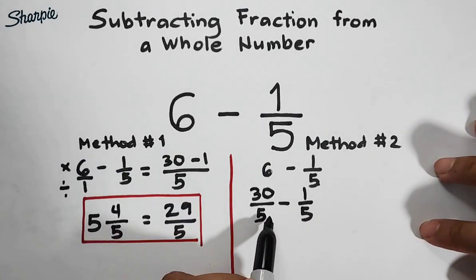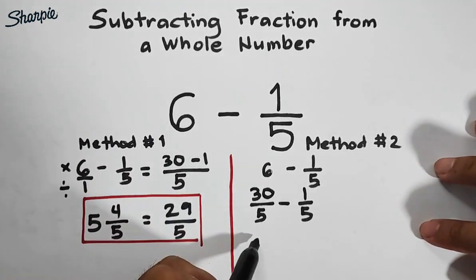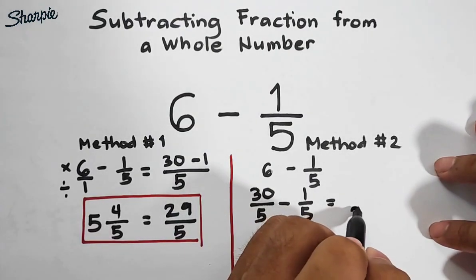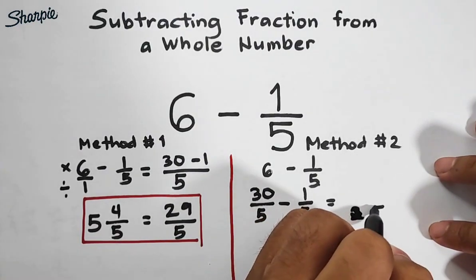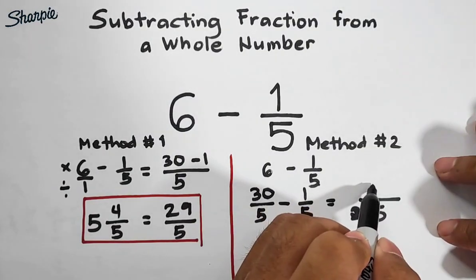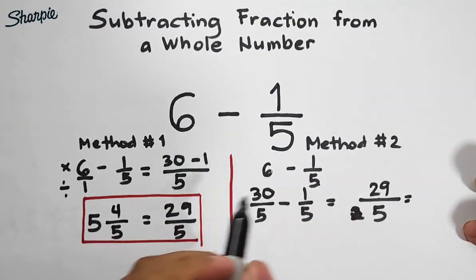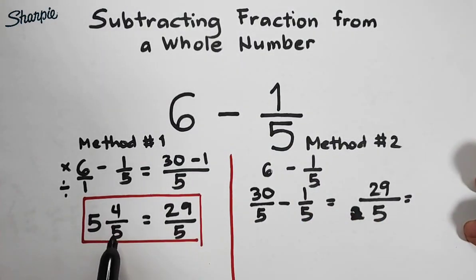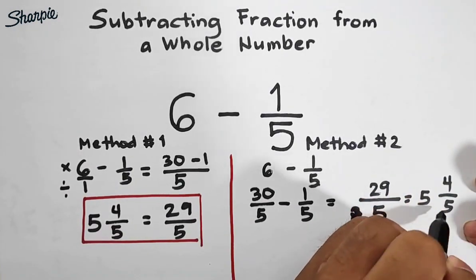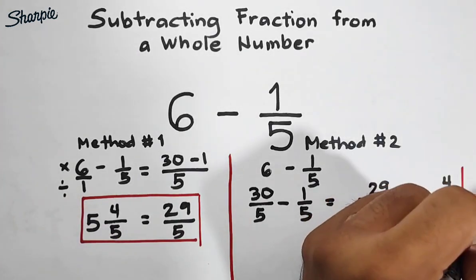Then subtract 1 over 5. In this case, we don't need to find the LCD because they have the same denominators. Simply copy the denominator, which is 5, and subtract the numerators: 30 minus 1. That gives you 29 over 5. The equivalent mixed number is still 5 and 4 over 5. This is the answer for this problem.